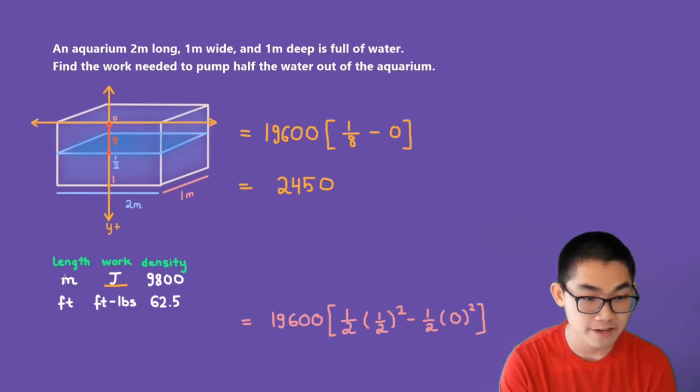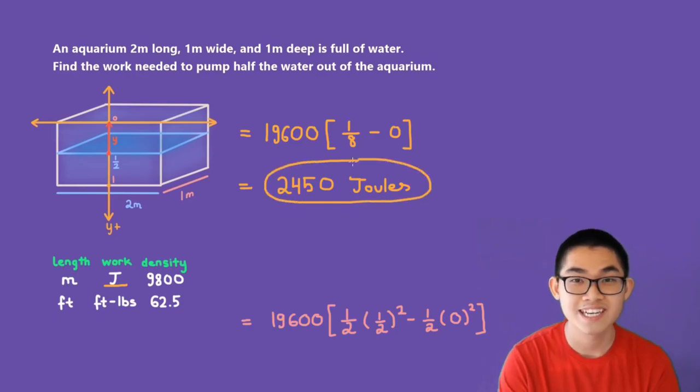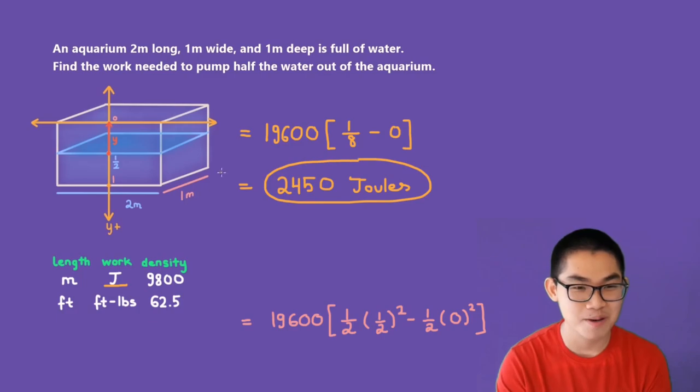And that's it. That is the answer, and the unit will be joules. Remember, because the length they've given us is meters, the answer will be 2,450 joules. This is the answer to this question, the amount of work that it takes to pump half the water out of the aquarium.